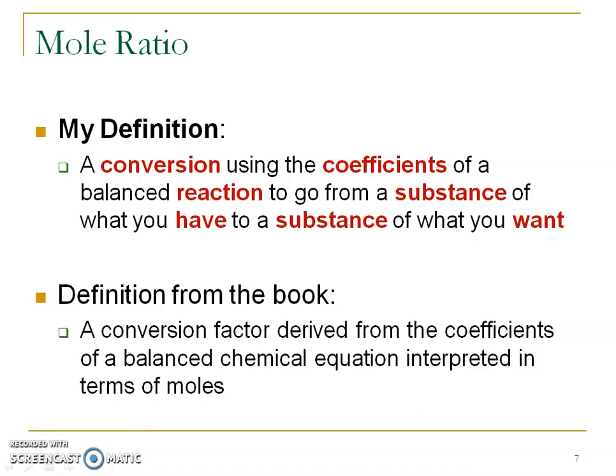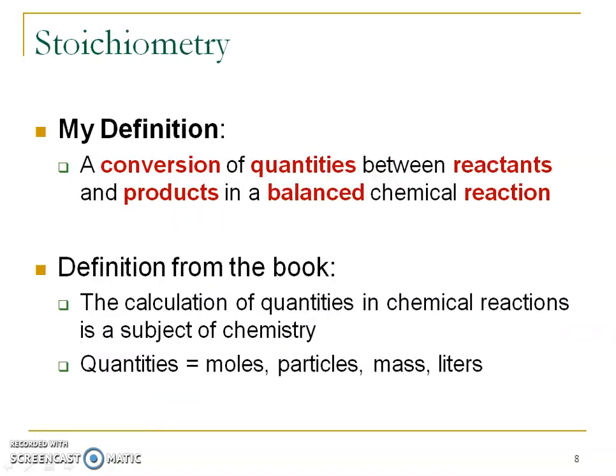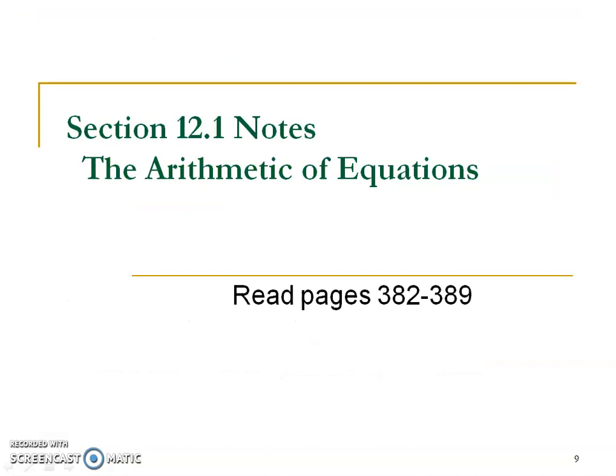That's where those dimensional analysis skills are going to come in handy. Not only are we going to convert grams to moles of a substance using mole island, but now we have to go from moles of hydrogen gas to moles of water formed. So you're going to use those coefficients as a conversion going from a substance of what you have to a substance of what you want. Stoichiometry is another way of converting quantities of reactants and products from a balanced chemical equation. At the end of this chapter, you should be able to do stoichiometry problems, which is just a big dimensional analysis problem. So Section 1 is the arithmetic of equations.